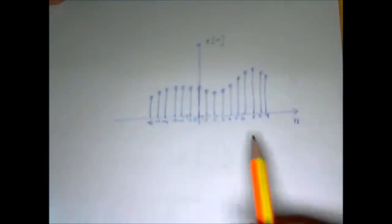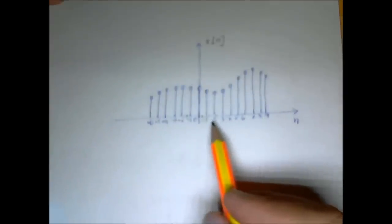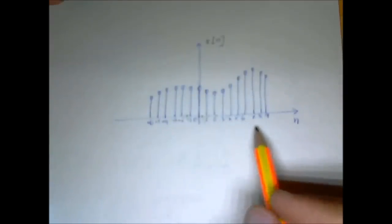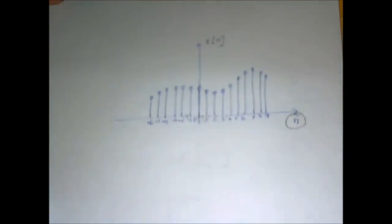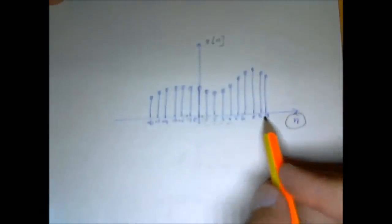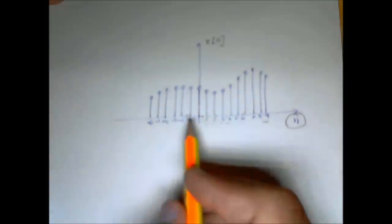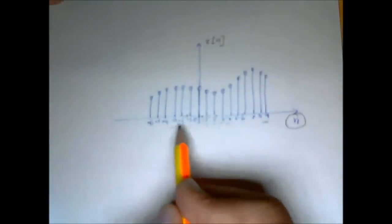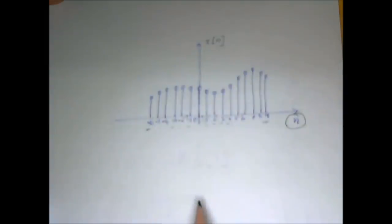A discrete time signal is only defined for integer values of the independent variable. Here the independent variable is n. As you can see, I have written n as 1 or 2, 3, 4, 5 up to 9. Similarly I have negative 1, minus 2, minus 3 up to minus 6. So that's a discrete time signal.